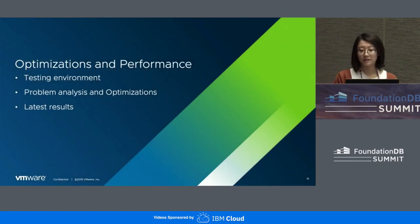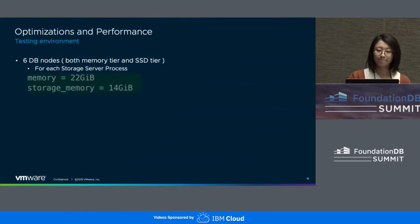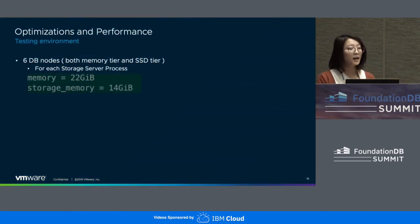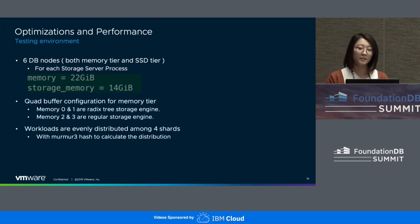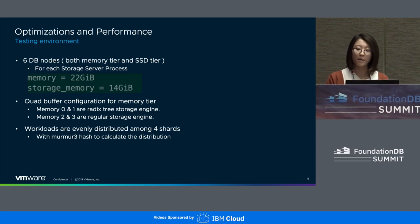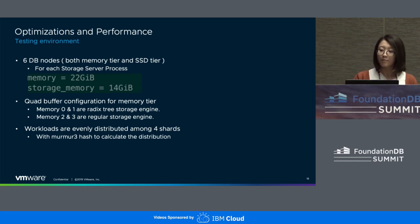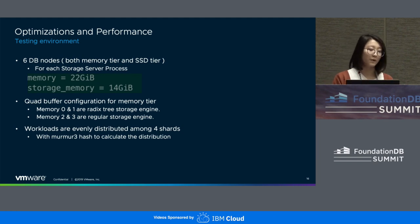In this section I will focus on the optimizations we came up with after the first round of results. One thing worth mentioning is our test environment: it has six DB nodes in total. For each storage server process, memory is set to 22 gigabytes and operating space is set to 14 gigabytes. One amazing property of our testing cluster is that it has a quad buffer configuration, which means we send Wavefront data to four memory shards with memory hash to calculate distribution. This gives us the ability to see how Radix Tree behaves against the regular one under the same workload. Memory shards zero and one are the Radix Tree storage engine, and memory shards two and three are the regular storage engine. Workloads are evenly distributed among the four shards.